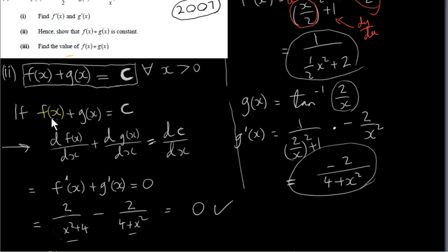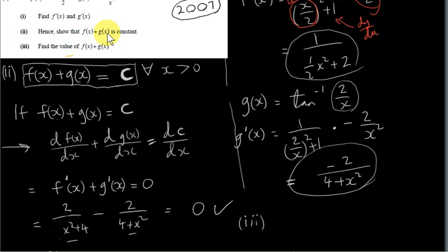Since f prime of x plus g prime of x equals zero, this tells us that f of x plus g of x must be constant. For part three, we need to find the value of that constant: just pick any value of x and plug into f of x plus g of x. You'll get 1.571 radians, or equivalently 90 degrees.